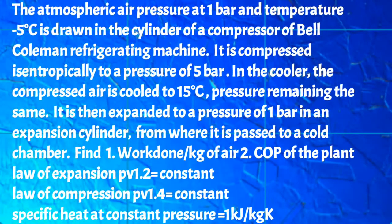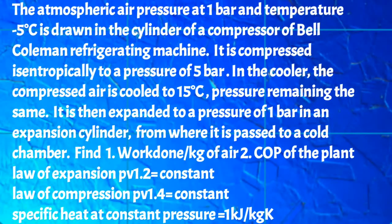Find the work done per kilogram of air and the coefficient of performance of the plant. For air, assume the law of expansion PV raised to 1.2 equals constant, the law of compression PV raised to 1.4 equals constant, and specific heat at constant pressure Cp equals 1 kJ per kilogram Kelvin.